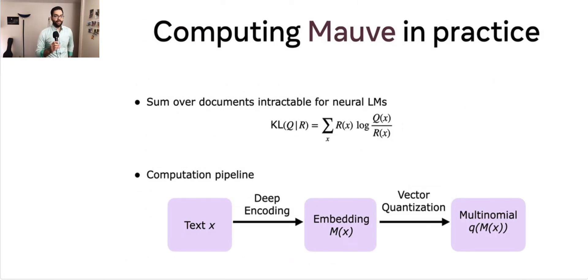Next, we turn to computing MAUVE in practice. MAUVE requires computing a KL divergence, which involves a sum over all documents x. Now, this is intractable for neural language models. Therefore, our computation pipeline first takes a deep encoding, which gives a continuous distribution in an embedding space. This encoding captures the important features of the text. Now, estimating a KL divergence of a high-dimensional continuous distribution is still hard. Therefore, we apply a vector quantization method to get a low k-dimensional discrete distribution. Now, in this quantized space, we can efficiently compute all the KL divergences required by MAUVE by simply summing over the k-dimensions.